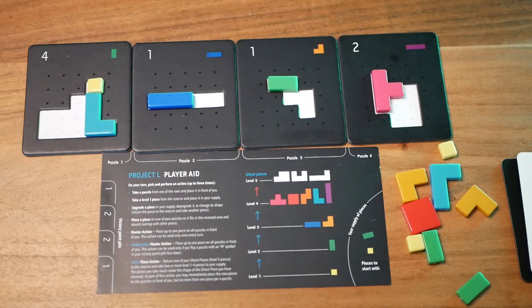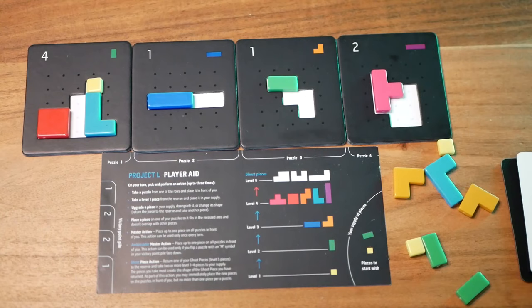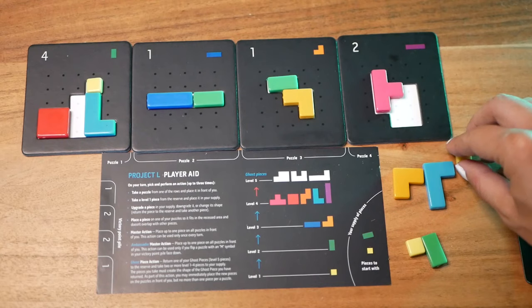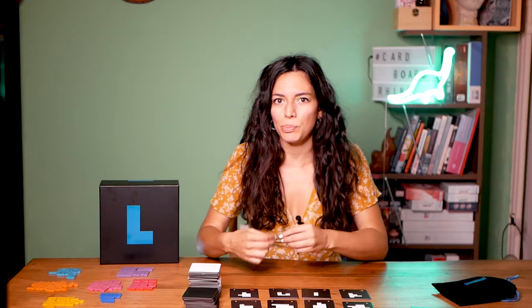Last, we have the master action, which you can do only once per turn. It is like the place action, but you can do it simultaneously to all open puzzles that you have in front of you. You place up to one piece from your personal supply into each puzzle above your player mat. You may choose to not place a piece on a puzzle if you don't want to. This is a very cool action to do if you have multiple open puzzles in front of you and the right tiles to put in them, as this boosts your engine.